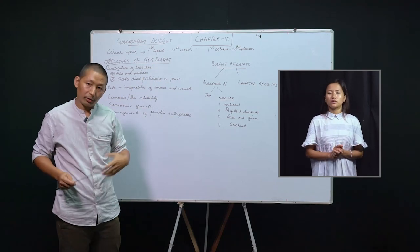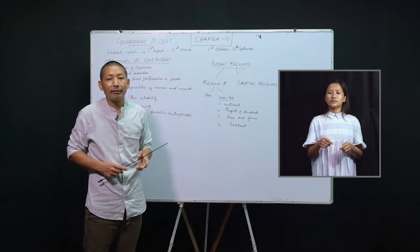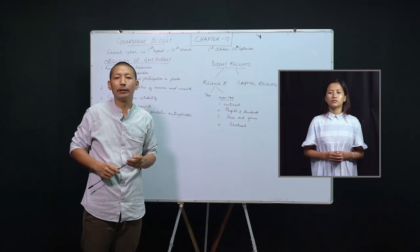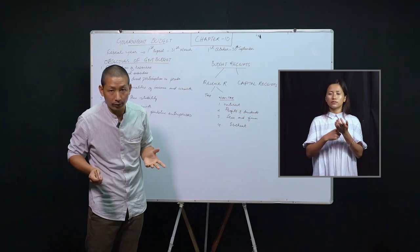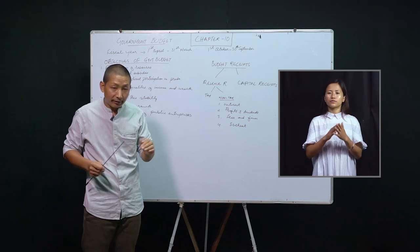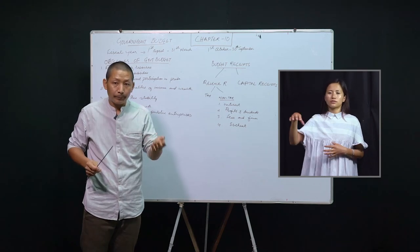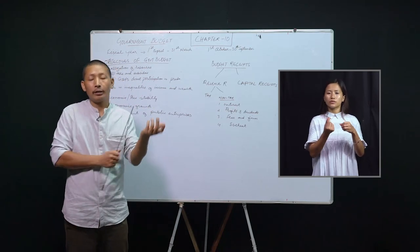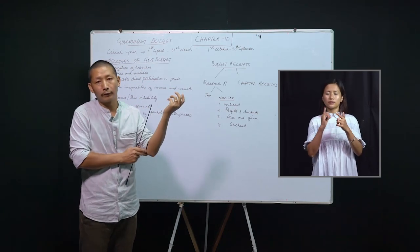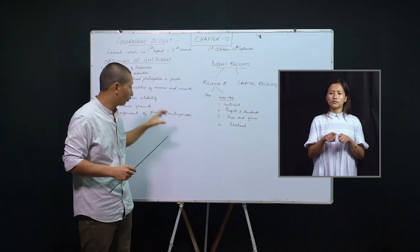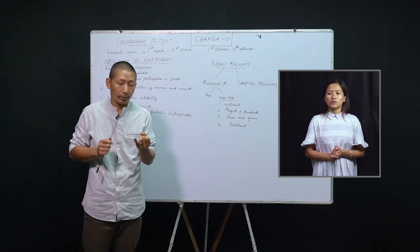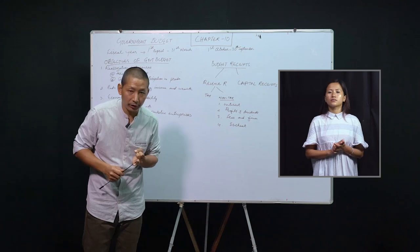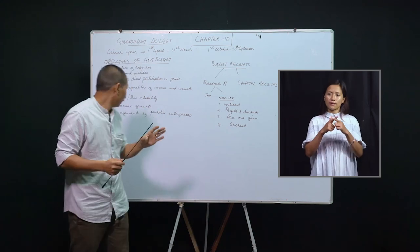Number four: economic growth, which simply means sustained, continuous increase in the real GDP of the country, or increase in the quantity of availability of goods and services in the economy. To ensure this, the government uses revenue policy and expenditure policy.